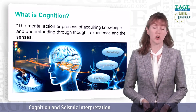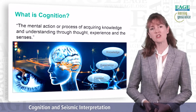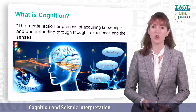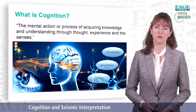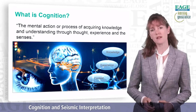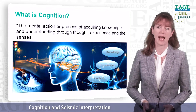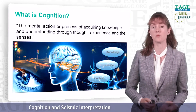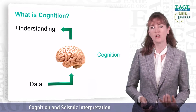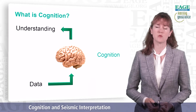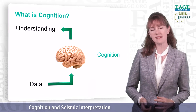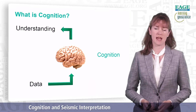So what is cognition? Cognition is the mental action or process of acquiring knowledge and understanding through thought, experience and the senses. It's how we understand the world around us, how we make sense of everything that we see, we hear, and that we touch. Cognition is the way in which we transfer data into understanding, and this happens in many separate steps.